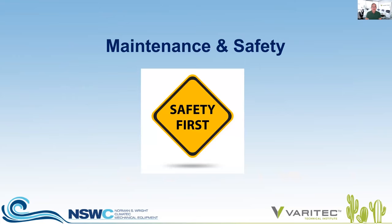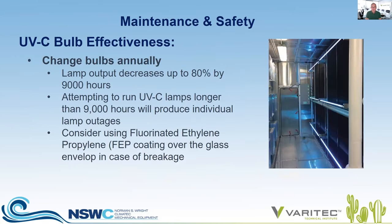Regarding maintenance and safety: UVC bulb effectiveness can decrease 10 to 20 percent over a year, so manufacturers request that every owner change out bulbs once a year to make sure the technology maintains its effectiveness. If you try to run lamps longer than 9,000 hours, you'll have lamp outages and lose effectiveness. Another design consideration is to use FEP coating to contain any glass breakage and prevent it from spilling onto an air handler floor. Your facility staff also need to be trained on the technology — you don't want to expose yourself to UVC light, as it has various harmful effects.